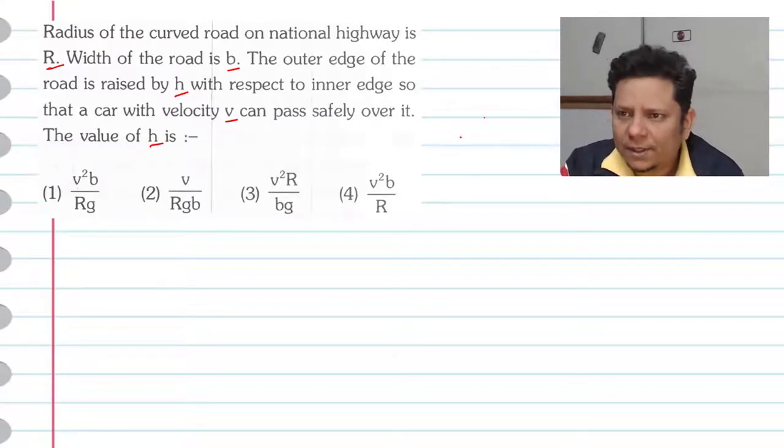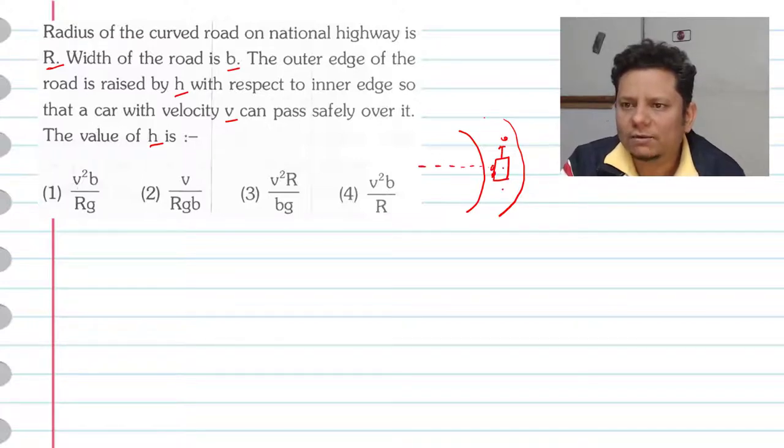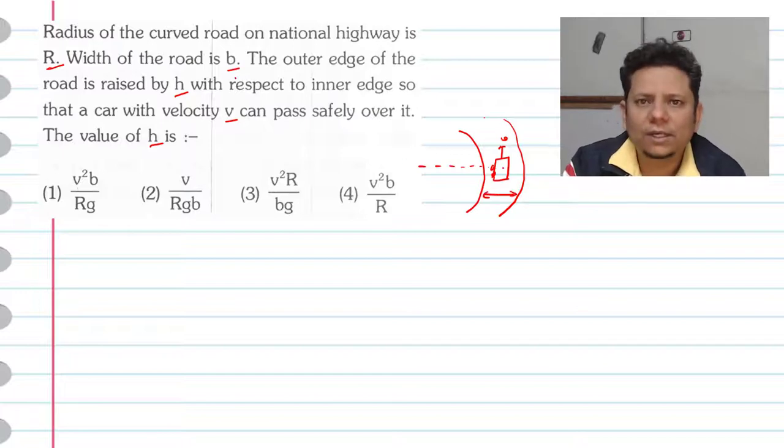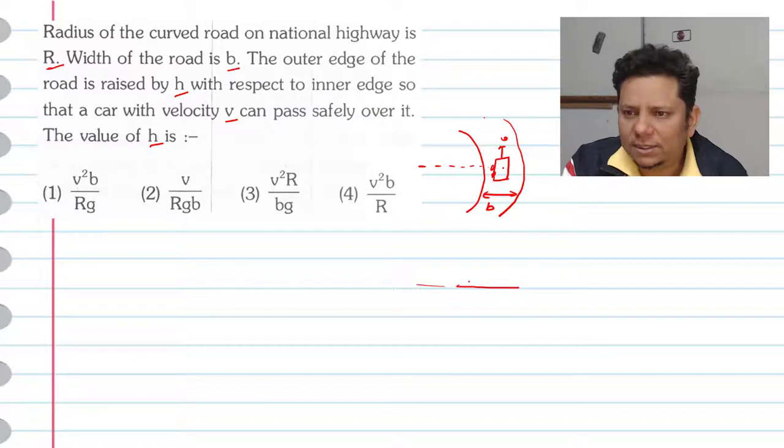Now the scenario is that this is a curved road. This is a car and this is V velocity. This is a radius of curvature. This is angle theta. This is H height.